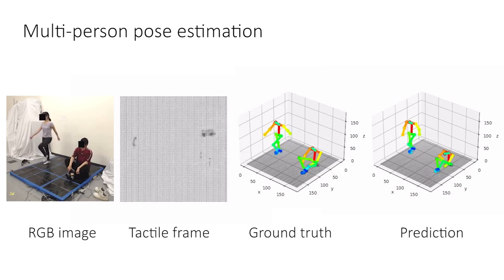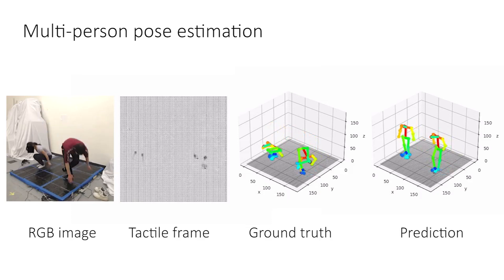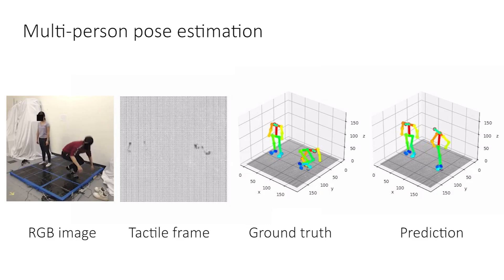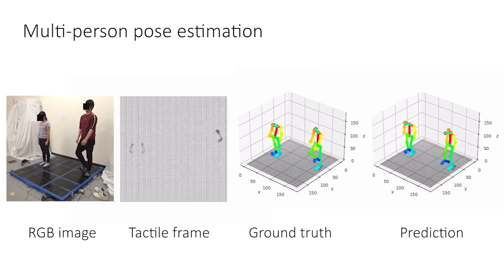In conclusion, we believe our work opens up new opportunities for human pose estimation using a sensing modality that is different and complementary to the vision system. It is unaffected by visual obstruction in a seamless and confidential manner, with potential applications in smart homes, performance, healthcare, and gaming.